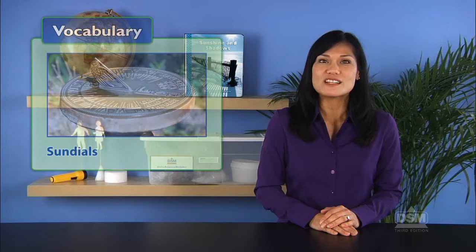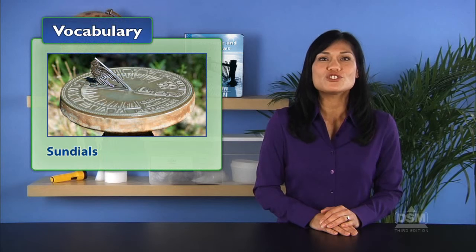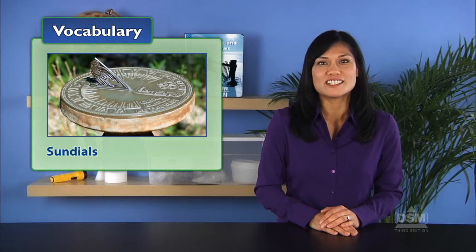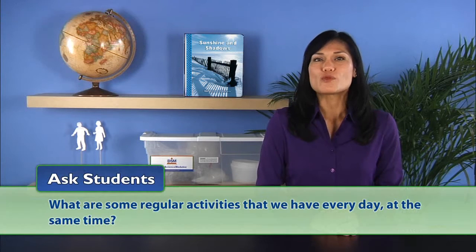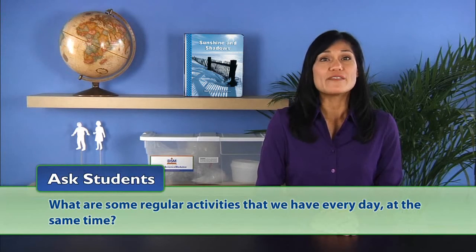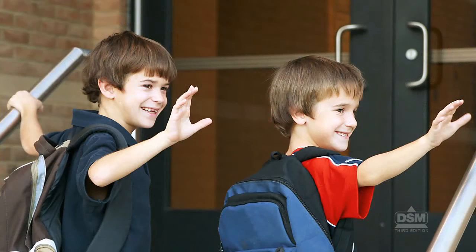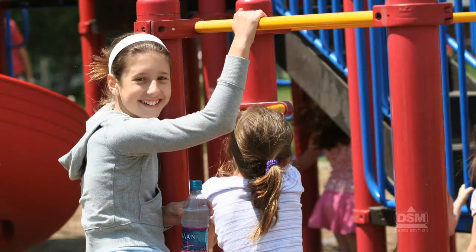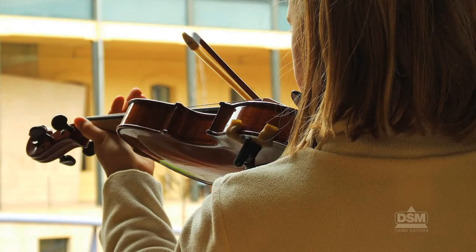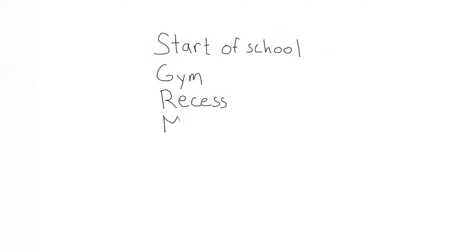Inform students that before there were watches or clocks, people made shadow clocks called sundials that used changing shadows produced by the sun to tell time. Next, ask students: What are some regular activities that we have every day at the same time? Students may mention the start of school, snack time, recess, music class, and so forth. List the activities on the board in the order that they occur during the day.